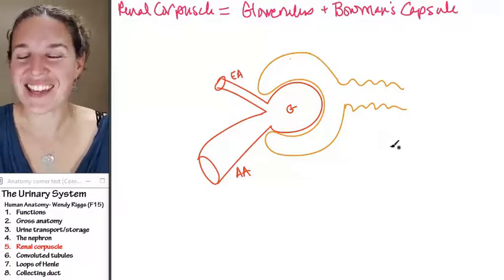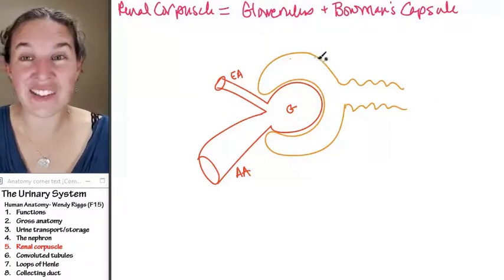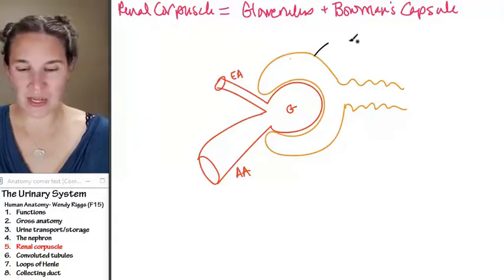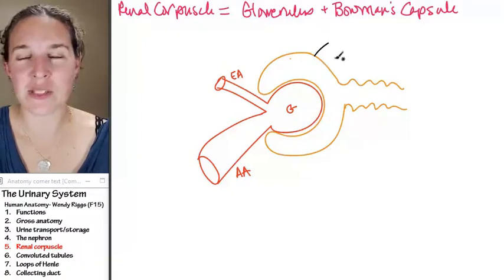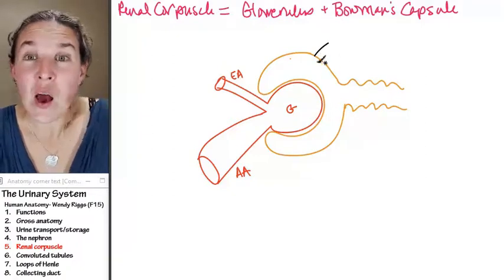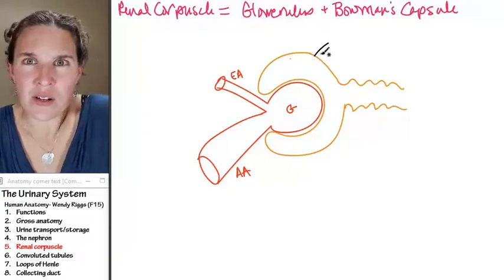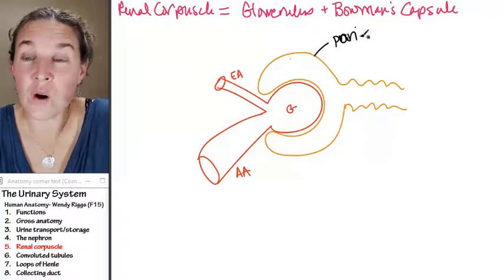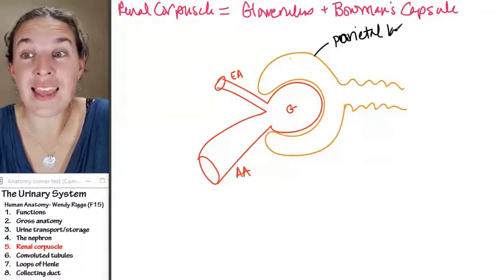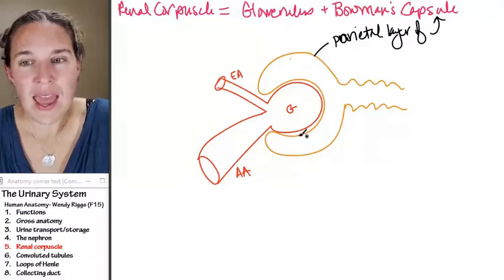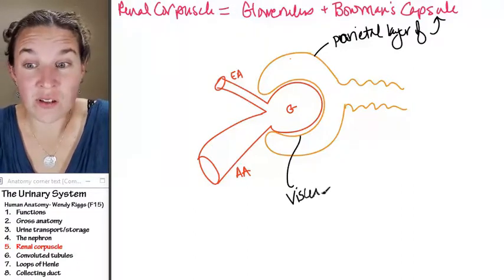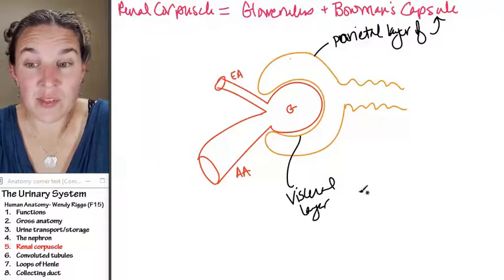You actually have a visceral layer and a parietal layer of Bowman's capsule. And let's make sure we have our terminology. That's exactly what it's called. You tell me. My little stick pointer is on the parietal layer of Bowman's capsule. And now my little stick is on the visceral layer of Bowman's capsule.